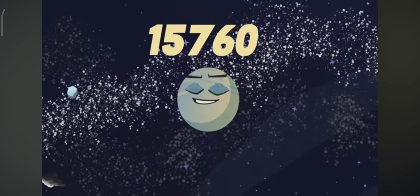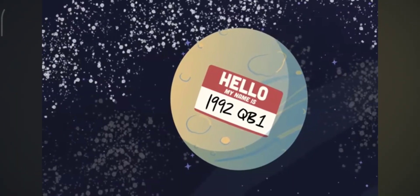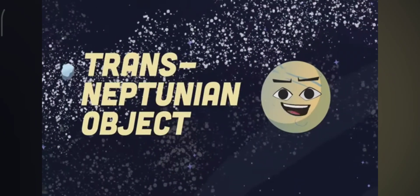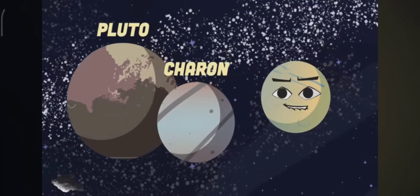I'm 15760 Albion, provisionally designated 1992 QB1. I'm the first trans-Neptunian object discovered after Pluto and Charon. I was uncovered.